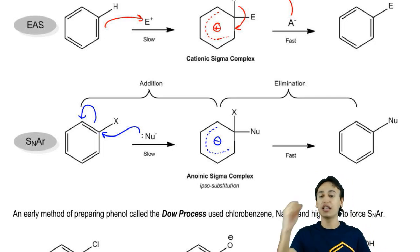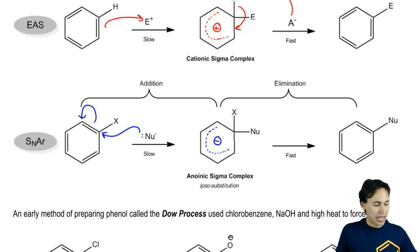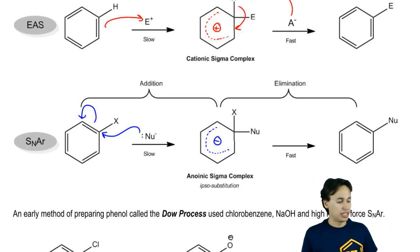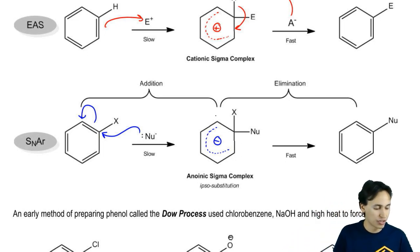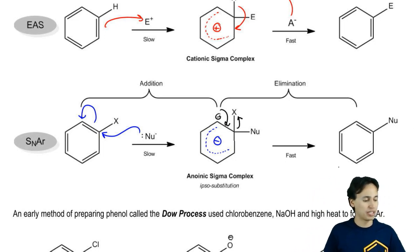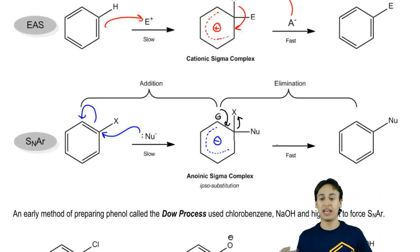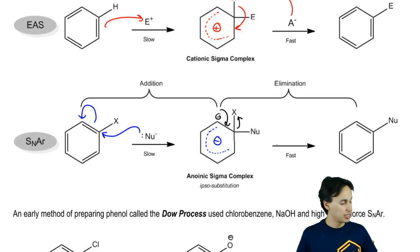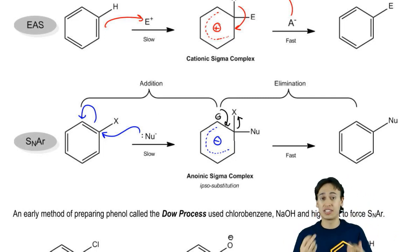It's similar to the EAS sigma complex, but it's a negative charge instead of a positive charge. Then eventually, the negative charge reforms a double bond, kicks out the X, and in the elimination step, the nucleophile ends up substituting where the X was. As you can imagine, this anionic intermediate is extremely unstable because benzene already has so many electrons — now adding a full negative charge in there is very unfavorable.